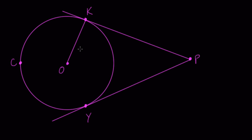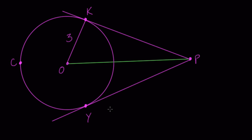In this problem, we're told that the radius over here is equal to 3. And then we're told that the line OP, right here, is equal to 5. This is not to scale, but this green line is 5 and the radius is 3.